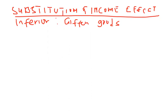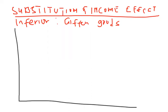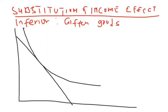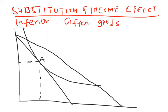I will start by drawing a different diagram. This is my budget constraint and this is my initial equilibrium — I'll call this optimal point A. Now let's say there's a fall in price. Because there's a fall in price, this budget constraint pivots outward to this new point, and as a result of the falling price we now have a new indifference curve tangency at point B.